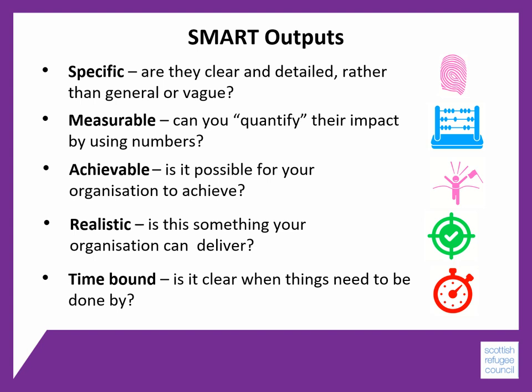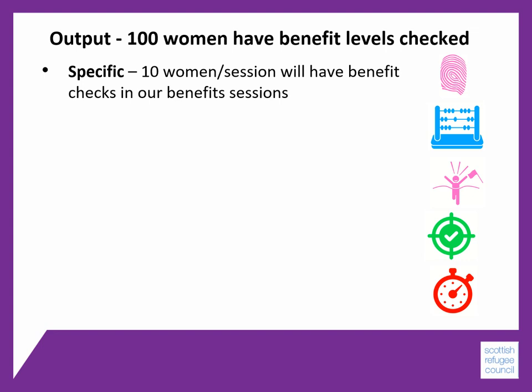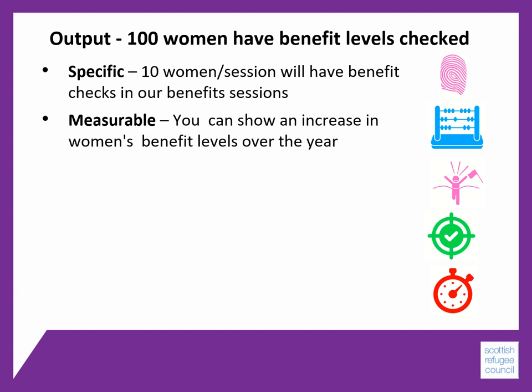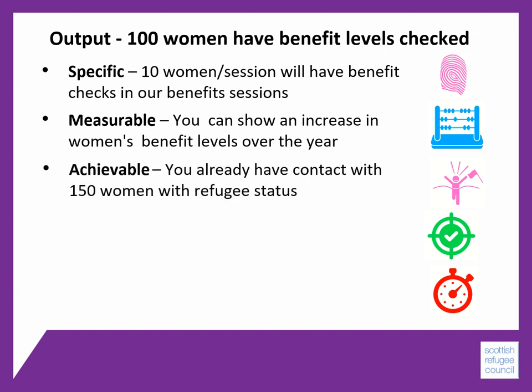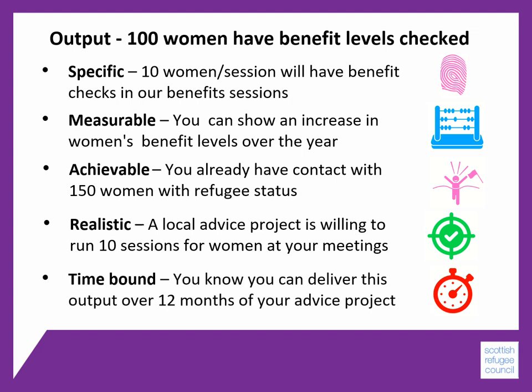Now let's look at what this might mean in a real worked example. If your output is that 100 women will have benefit levels checked during your project, you can say specifically there will be 10 women per session who will have benefit checks. These will be measurable because you can show an increase in the women's benefit levels and the difference it has made to their lives over the course of the year. They will be achievable because you already have contact with 150 women with refugee status whose benefits could be improved. It will be realistic because a local advice project has already agreed to run 10 sessions for women at your ordinary meetings. And it will be time-bound because you can deliver this in 10 sessions over a 12-month period of your project.